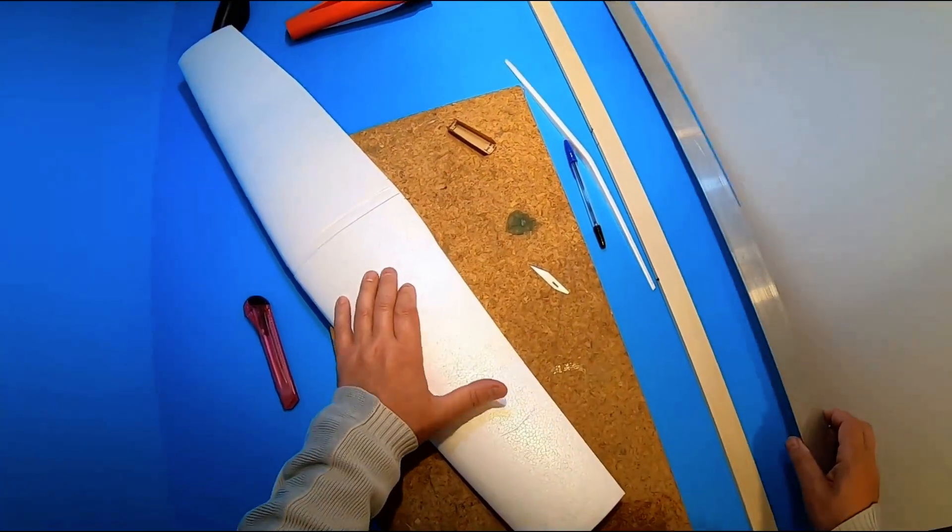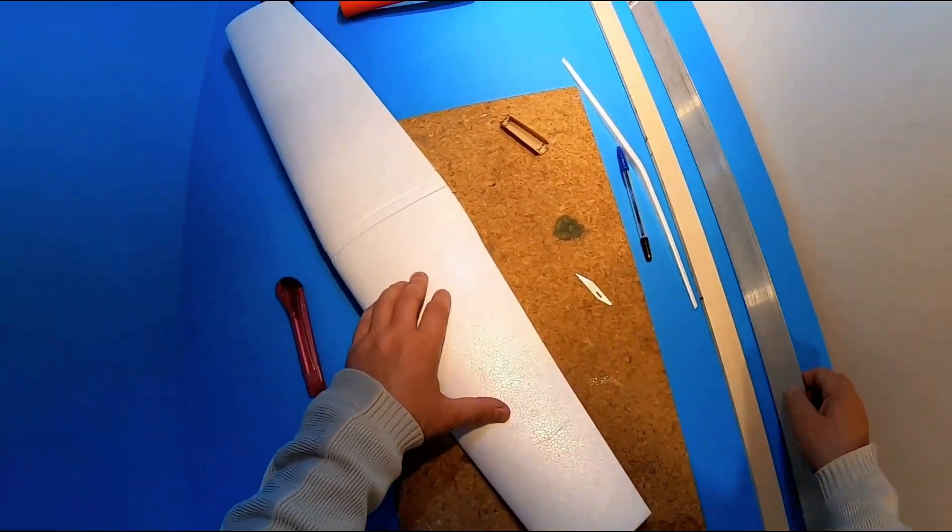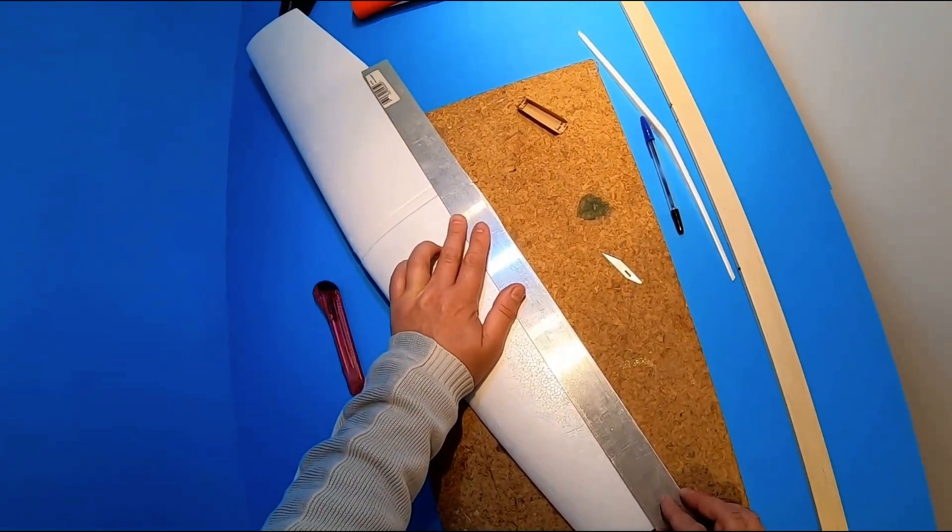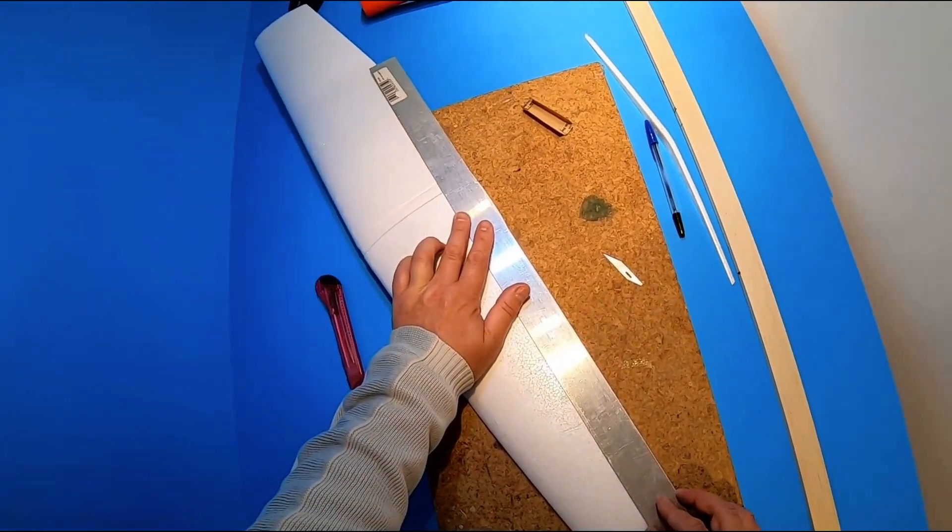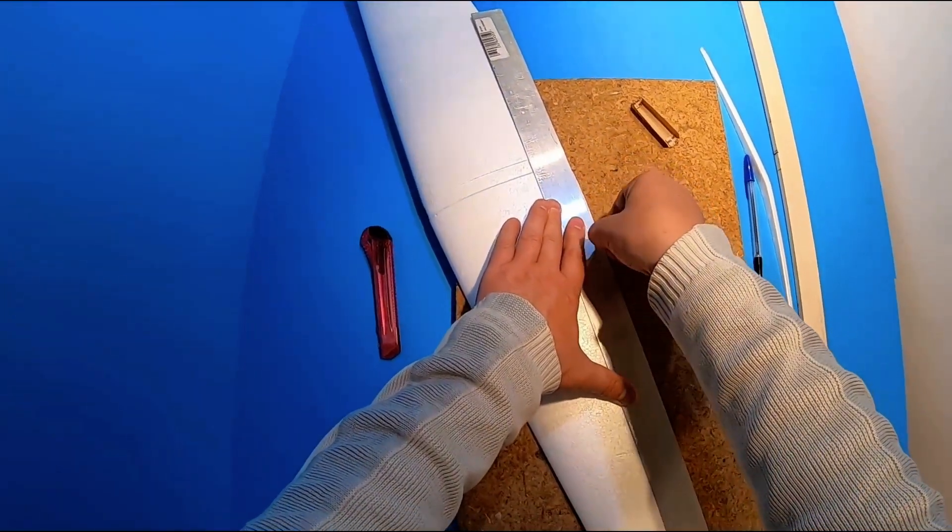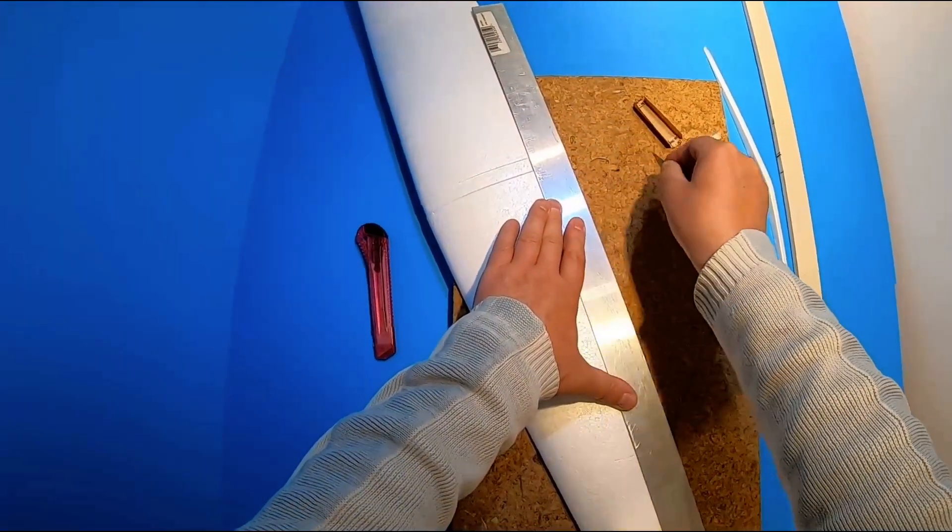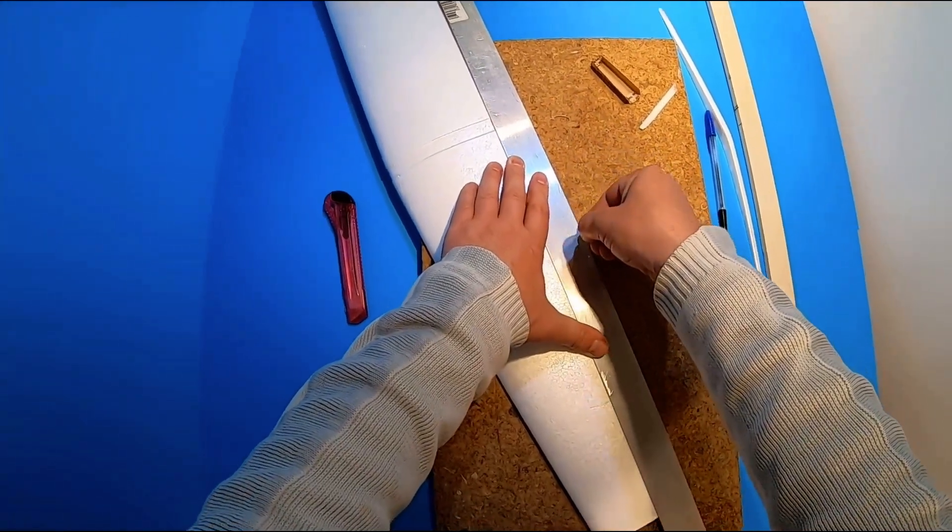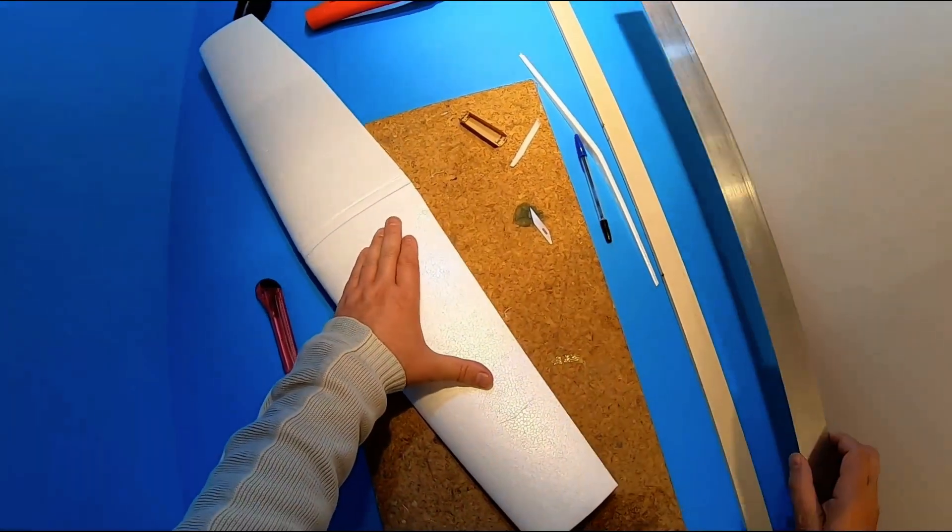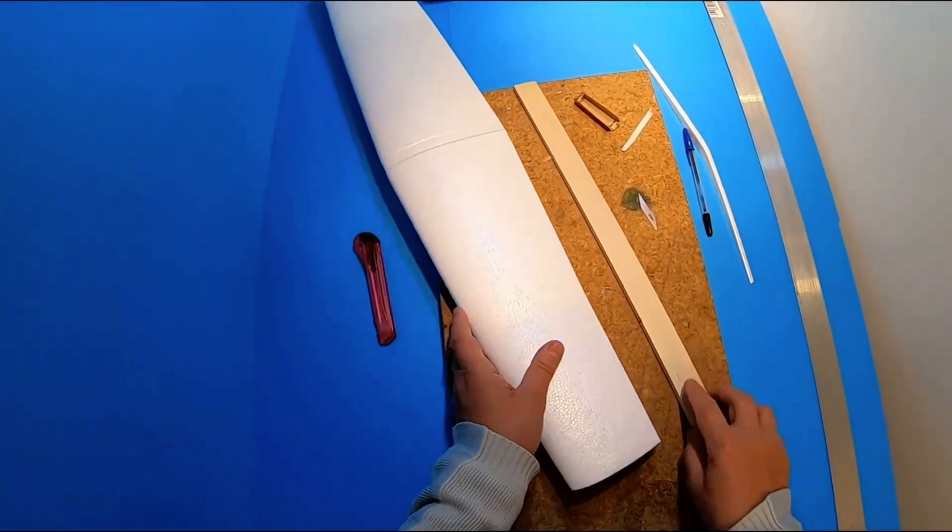Not quite straight there. Let's put that back on again. Try again. There we go, just run it straight to make sure. That's much better. Now I can put a trailing edge on there.